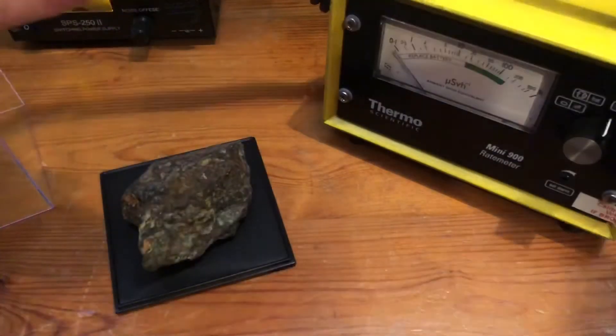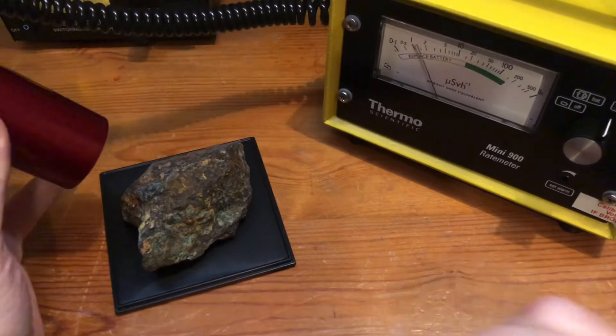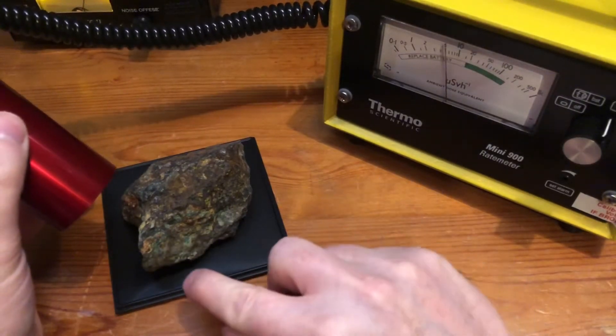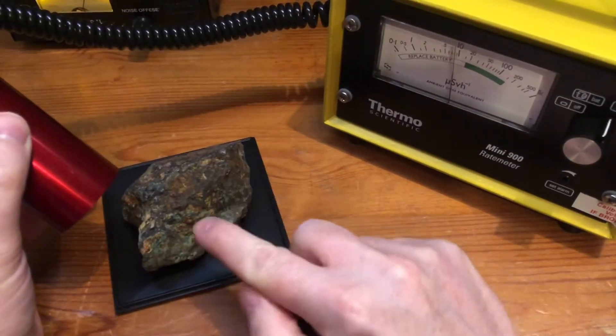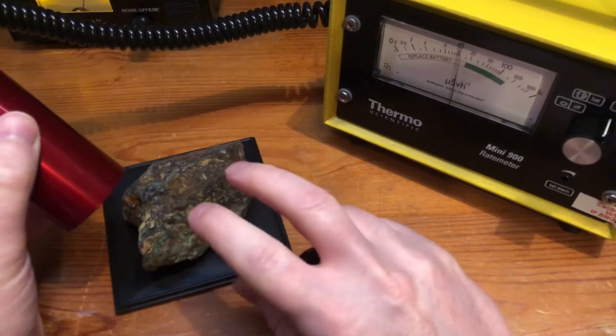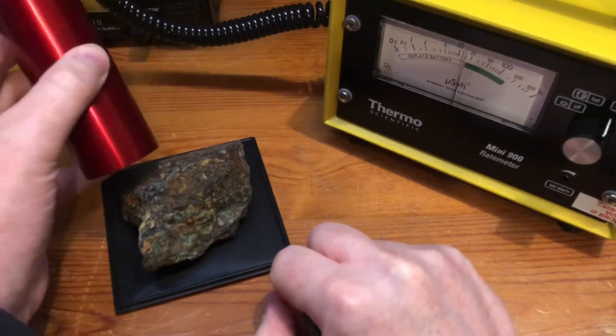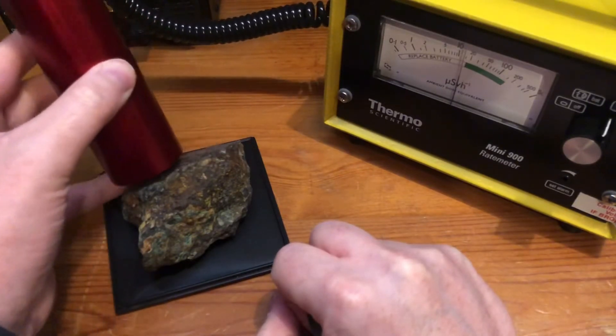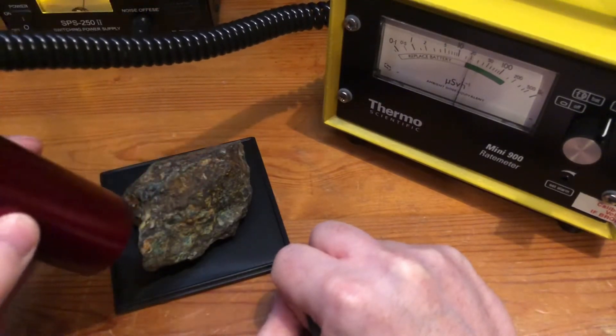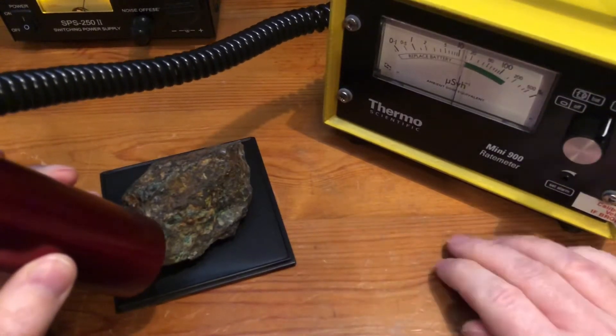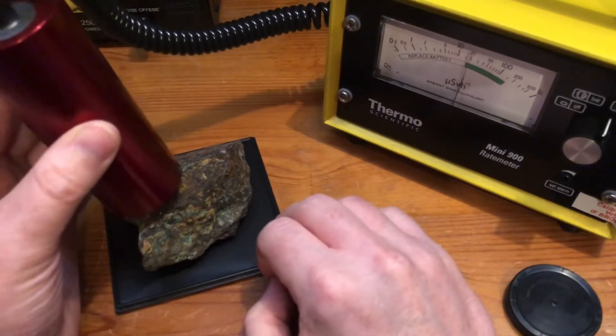The thing about pitch blend is it's obviously naturally occurring, and on certain rocks there's certain parts of it that are radioactive. So as you can see, the rock itself is radioactive. We're getting about 20 microsieverts.